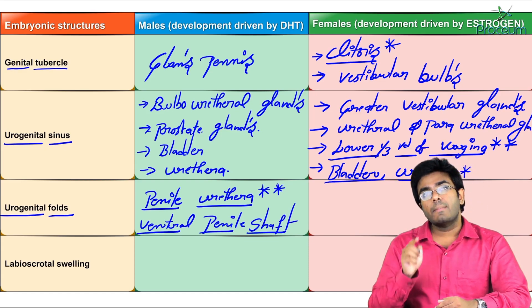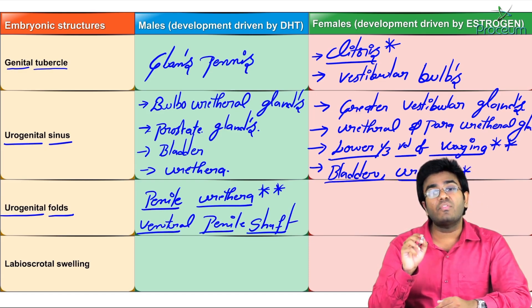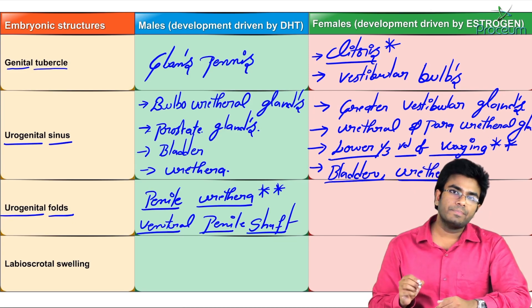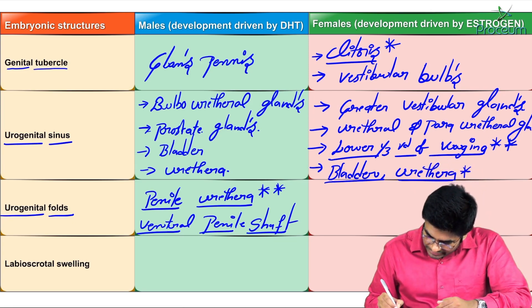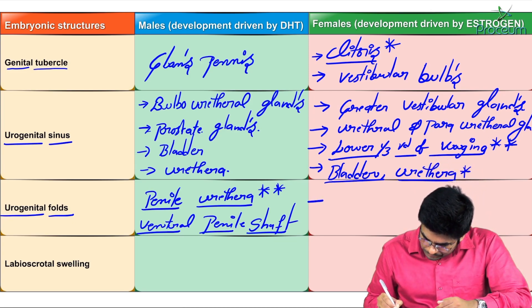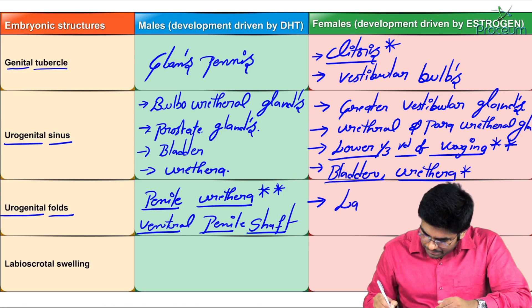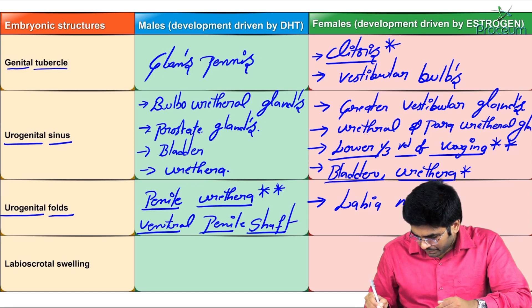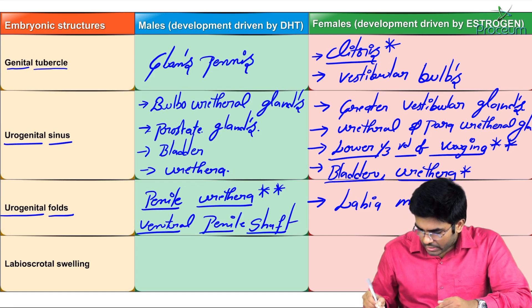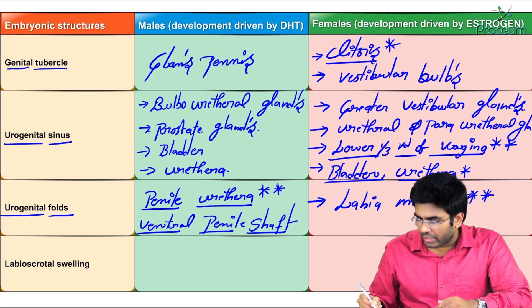But the same urogenital folds in females will develop into labia minora. So if someone asks, labia minora are derived from urogenital folds.